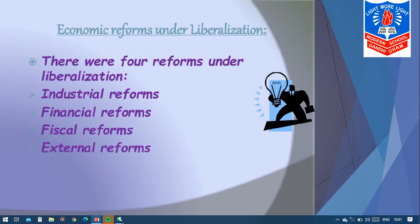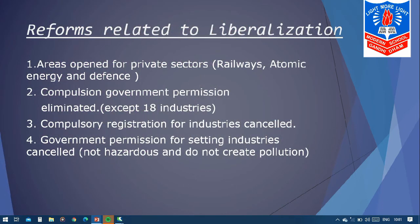What were the economic reforms under liberalization? There were four reforms: industrial reforms, financial reforms, fiscal reforms, and external reforms. First, areas were opened for private sectors apart from railways, atomic energy, and defense. The government slowly and gradually gave private sectors the opportunity to work in areas that were previously in government hands. These three sectors — railways, atomic energy, and defense — are still under full government control.